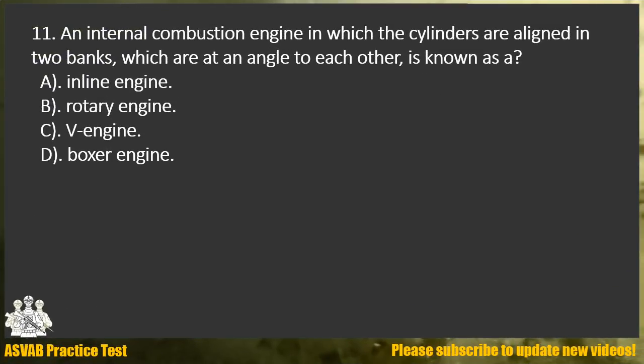Question 11. An internal combustion engine in which the cylinders are aligned in two banks at an angle to each other is known as: A. Inline engine. B. Rotary engine. C. V engine. D. Boxer engine.